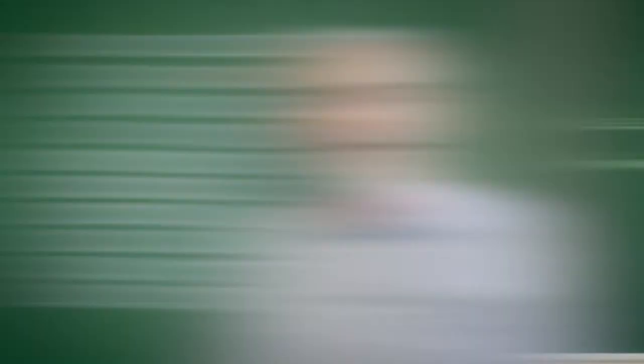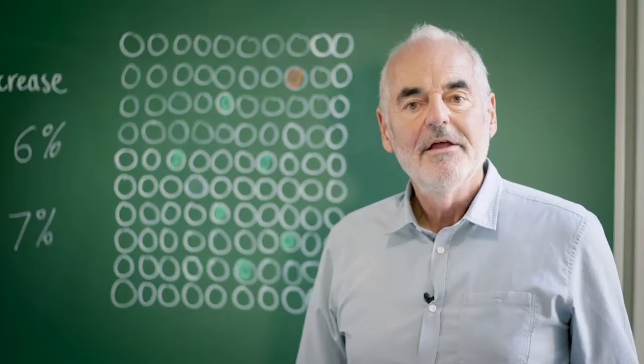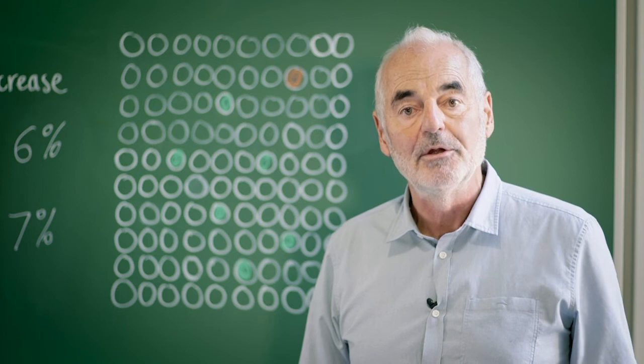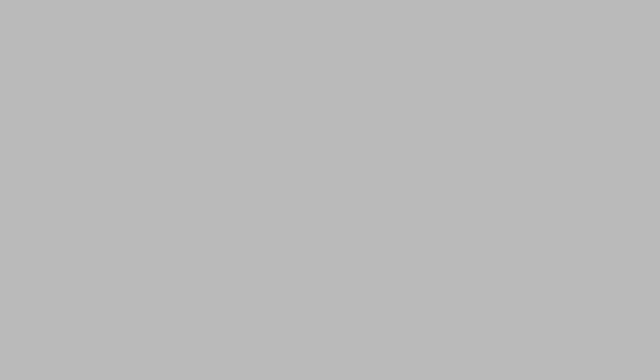The main conclusion is to be very cautious about using relative risks on their own and wherever possible to translate them into differences in absolute risks and then these can be expressed in terms of expected frequencies. We've written an online tool called RealRisk which will help you do all this and can even provide you with icon arrays. Right, I'm off for a bacon sandwich.